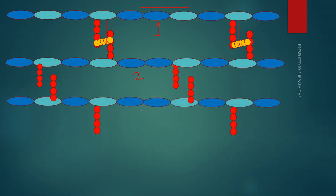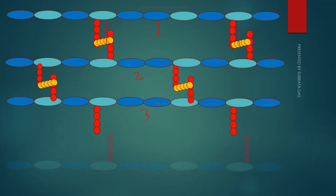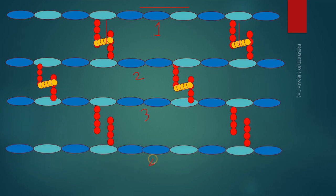This is the third peptidoglycan layer, and another pentaglycine bridge forms. And this is the fourth peptidoglycan layer, where the glycine bridge is also formed by the tetrapeptides. In this way, the peptidoglycan cell wall forms a compact, rigid structure through cross-linking via the pentaglycine bridge.